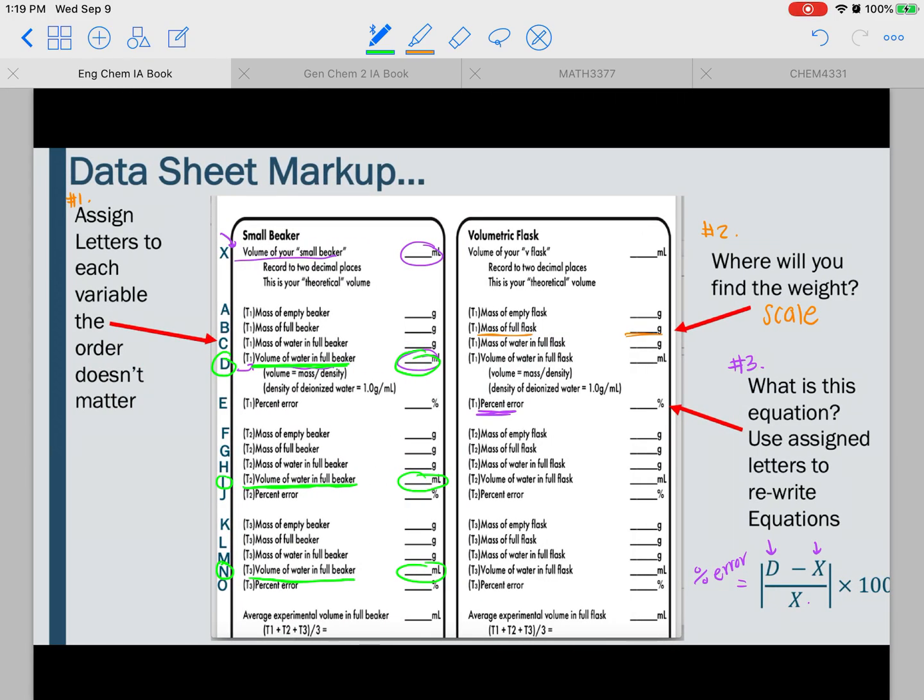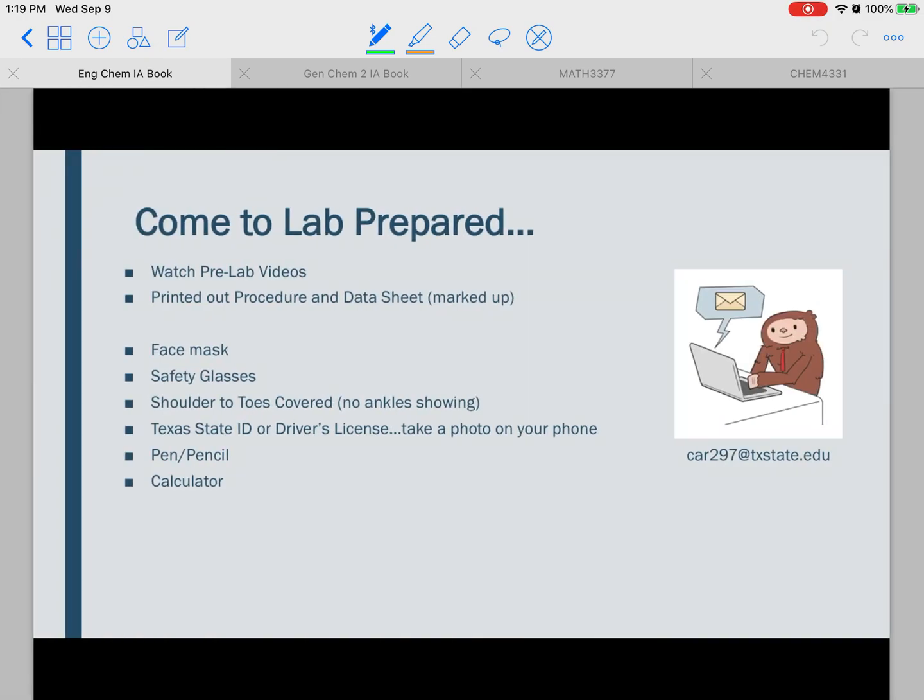And the same thing, it's the same thing for this equation right here too. Just some examples. Hopefully that makes sense. If you still have questions about this, send me an email. I know it can be a little confusing. So that's pretty much everything in the announcements that I'm sending you guys. So, come to lab prepared. That just means the first thing you're going to do is you're going to watch the pre-lab video, which you're doing right now. So that's great. You've already done that one. Cross it off. The next thing you're going to do is you're going to go print out your procedure, and you're going to do the data sheet markup, which is what we just talked about. And that's the work that you're going to have to do before you come into lab.